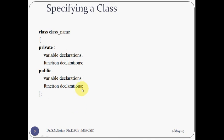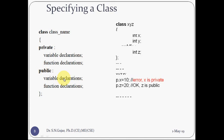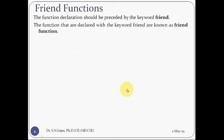Now specifying classes - using private and public. With public variable and function declarations, you can access them directly, for example p.x. But if something is declared in protected mode, you cannot use it directly. Only those declared in public mode can be accessed directly. In the next lecture we are going to start with the friend function.